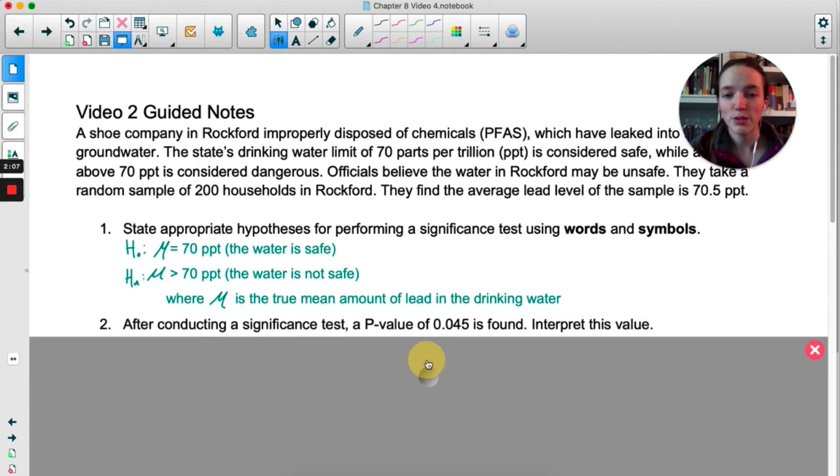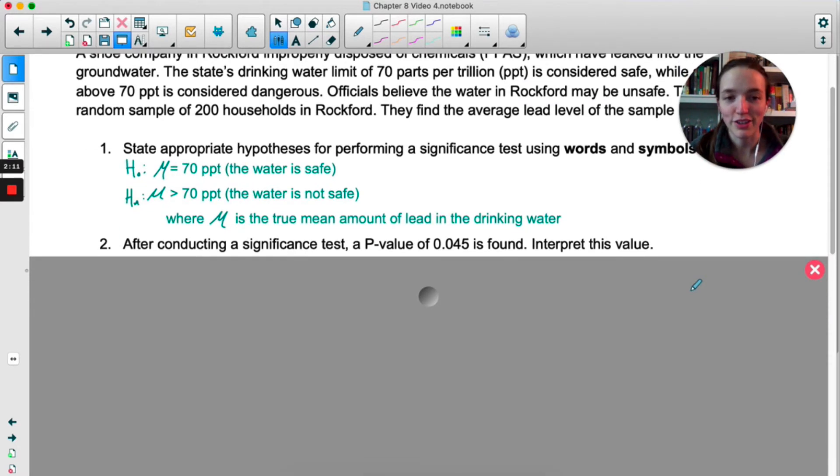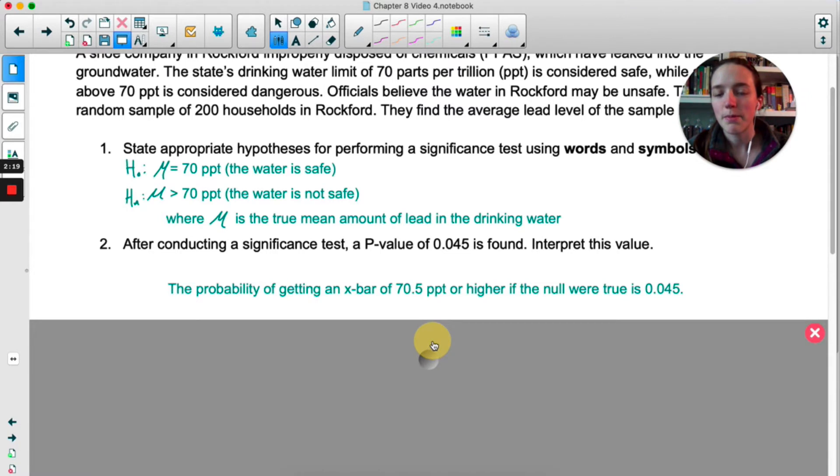Now in number two we conduct a significance test and we get a p-value of 0.045. It just says to interpret. We're not concluding, we're just interpreting. So that's the first part of our four-step process conclusion. The probability of getting an x-bar of 70.5 or higher if the null were true is 0.045. That's all you need for the interpretation.